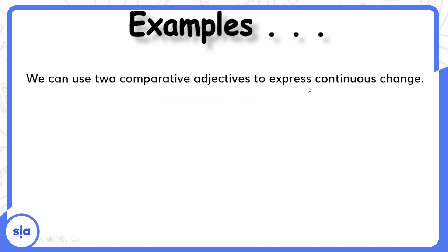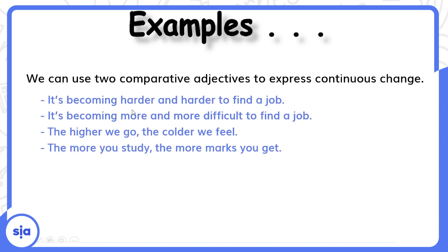We can use two comparative adjectives to express continuous change — تغيير مستمر. It's becoming harder and harder to find a job — harder and harder دي اتنين صفات تفضيل، الموضوع عمال يصعب ويصعب. It's becoming more and more difficult to find a job. The higher we go, the colder we feel. The more you study, the more marks you get — كل ما تذاكر أكثر، كل ما تجيب درجات أعلى.